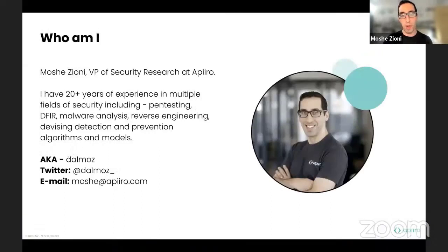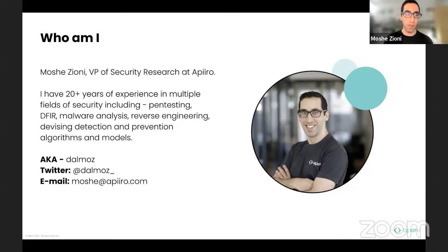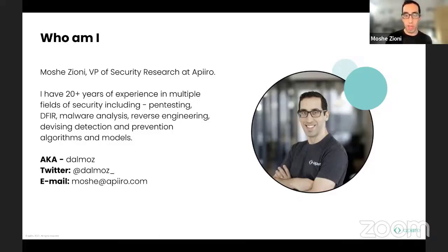My name is Moshe Tzioni. I've been around for about 20-plus years in the InfoSec community, especially in Israel and the US, in different positions and passions. Security research is the sole purpose for our being. I mainly consider myself a pentester and bug bounty hunter. For the past nine years, I've been devising detection and prevention algorithms at different scales. My last past life was in Akamai, where I was overseeing all of the cloud security solutions. Now at Apiro, we are securing the lifecycle of development, and I will talk about that and share some of our knowledge here.